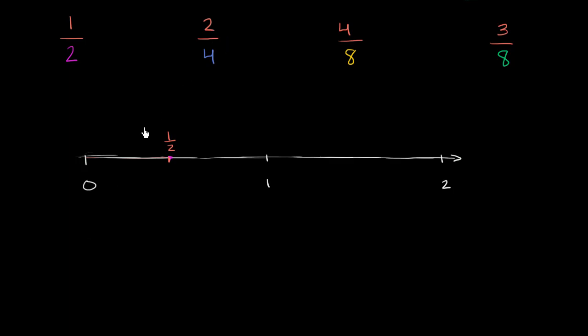Now let's think about 2 fourths. Well, to do 2 fourths, we would want to split the section between 0 and 1 into four equal sections. So let's do that. So 0. So that's 1 equal section, 2 equal sections, 3 equal sections, and 4 equal sections.